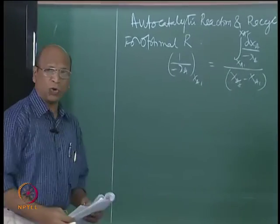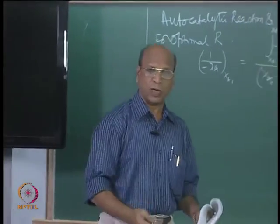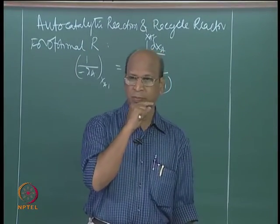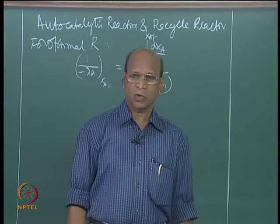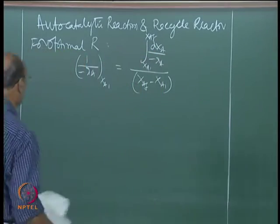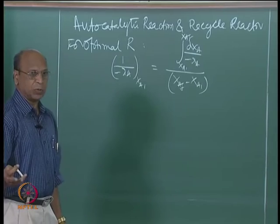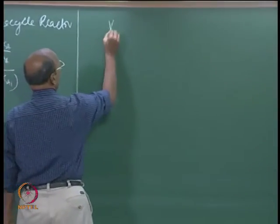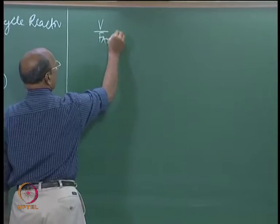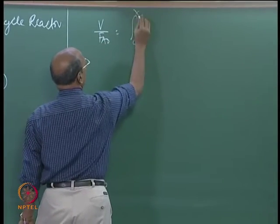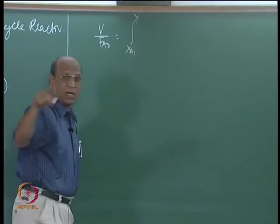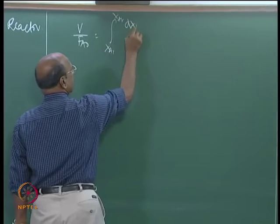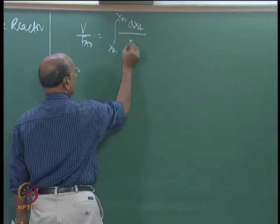How do you get this optimal recycle ratio? If I ask you to find it for 90 percent conversion, how do you do it? The normal analytical procedure is where we have V over FAnaught equal to the integral from XA1 to XAF of dXA divided by minus-rA.